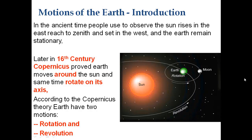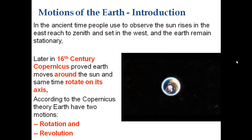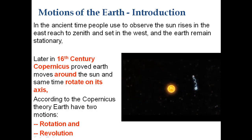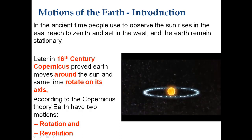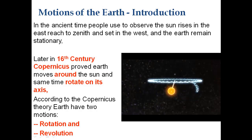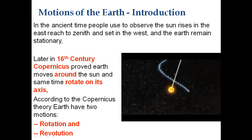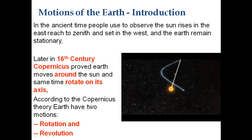Now watch a video clip to understand these two motions in detail. This is the latest observation and research about the motions of the Earth. Earth revolves about the Sun as well as rotates on its own axis. This jagged motion is called the wobbling of Earth on its own axis, due to the gravitational pull of the Moon and Sun. At the same time, Earth is also moving along with the Sun on an elliptical orbit.